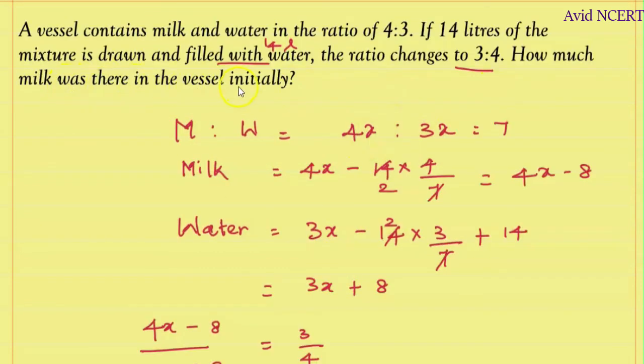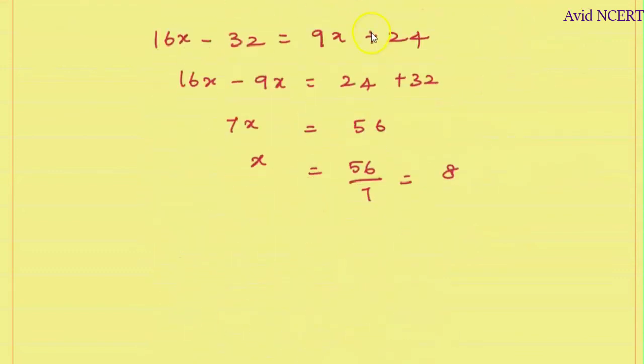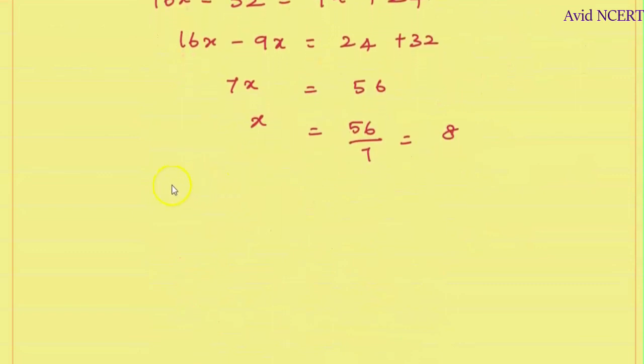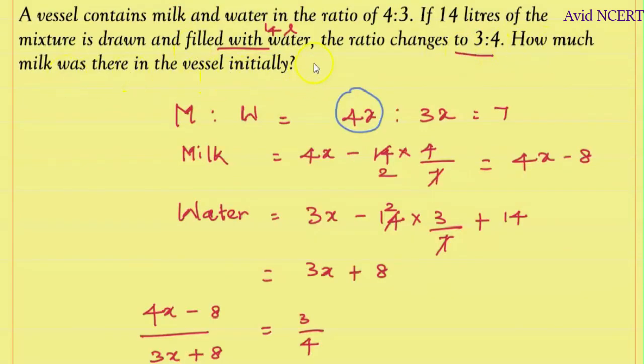How much milk was there in the vessel initially? The initial milk in the vessel was 4x, where x is 8. So milk originally in the mixture was 4 times 8, which equals 32 liters. The amount of milk in the vessel initially was 32 liters. If you have any doubts, please let me know in the comments.